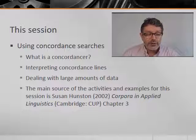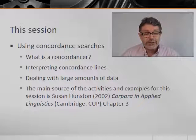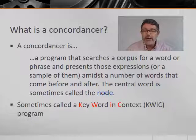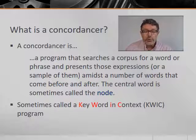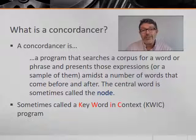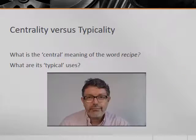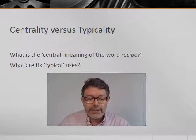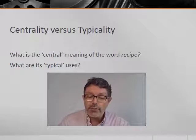I would recommend taking a look at Susan Hunston's book if you wish further information about the examples we'll consider in this session. We'll be using some online corpora to check her results and interpretations. A concordancer is a program that searches a corpus for a word or phrase and presents those expressions, or a sample of them, amidst a number of words that come before and after. The central word or search item is often referred to as the node, and a concordancer is sometimes called a keyword in context, or KWIC, program. The beauty of a concordance program is that we can pull together a lot of examples of a word or phrase and see them in a fairly limited context. Even in a limited context, patterns of usage and meaning should become apparent to the practiced analyst.